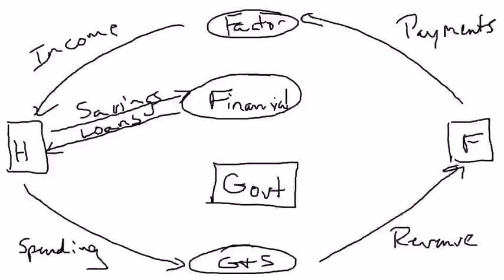Hi, everyone. Now that we've talked about the role of the financials sector in the circular flow diagram, I just want to talk a little bit about the government. We all think of the government as the United States government and state governments, and that's a pretty good way to start thinking about it.